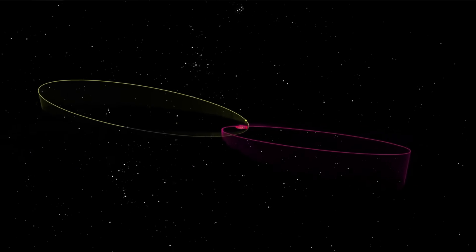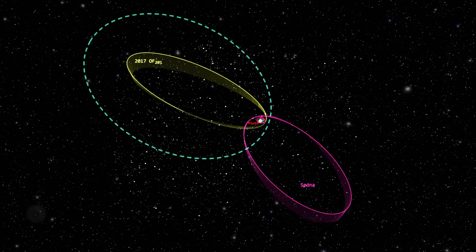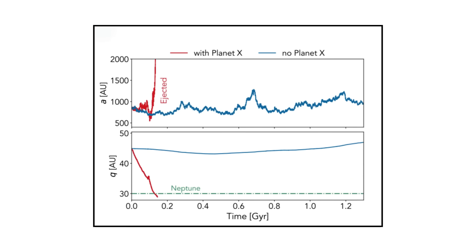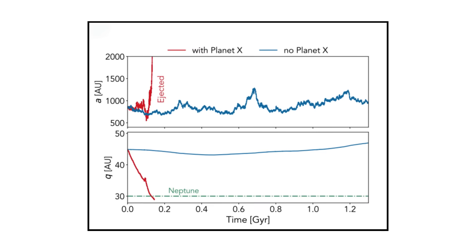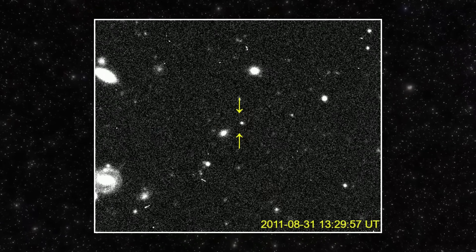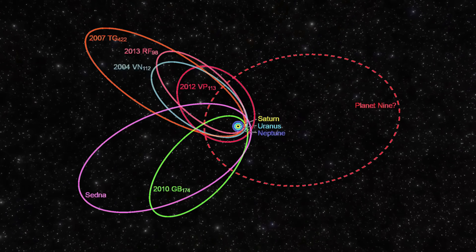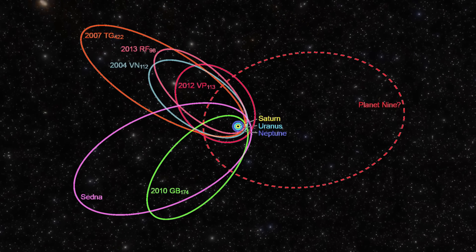Because if Planet Nine exists, and if it's the reason for the orbital clustering we've seen, then objects like OF 201 shouldn't exist. At least not in a stable orbit like this one. In fact, simulations show that if you add Planet Nine into the model, OF 201 gets kicked out of the solar system within 100 million years. So now we have a contradiction.